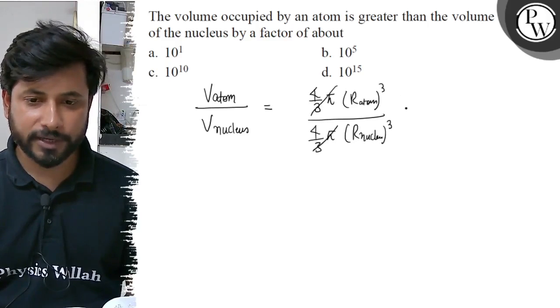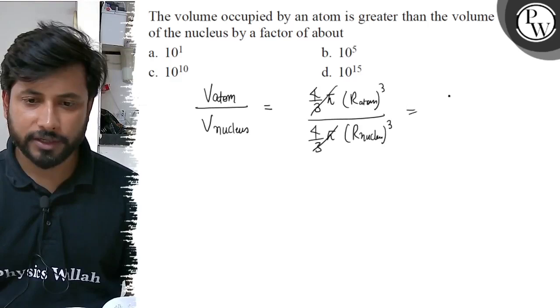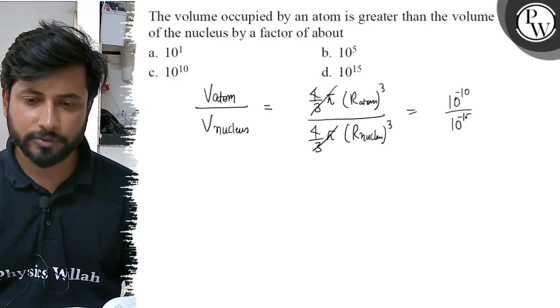4 by 3 pi cancels with 4 by 3 pi, leaving r atom by r nucleus cubed. The radius of atom is approximately 10 to the power minus 10 meters, and the nucleus is 10 to the power minus 15.